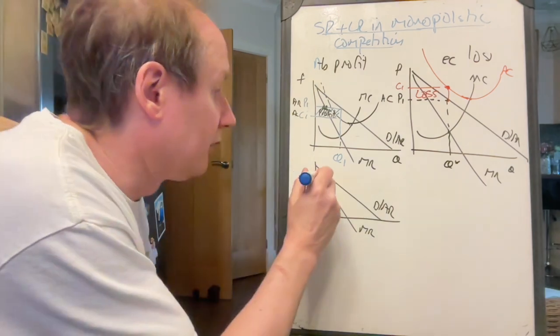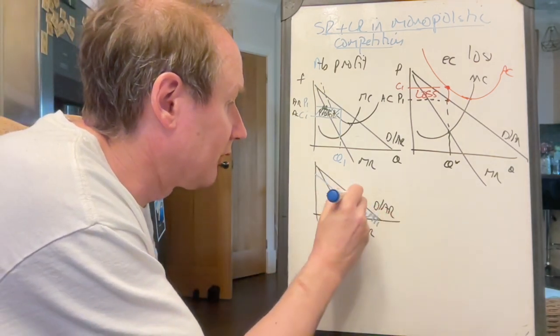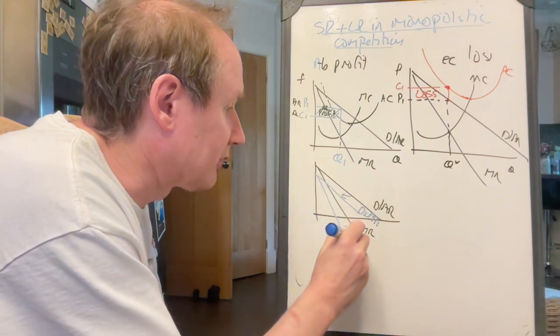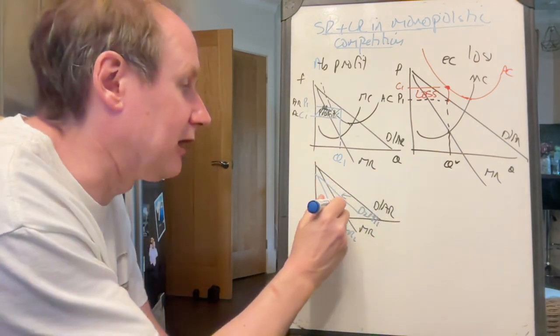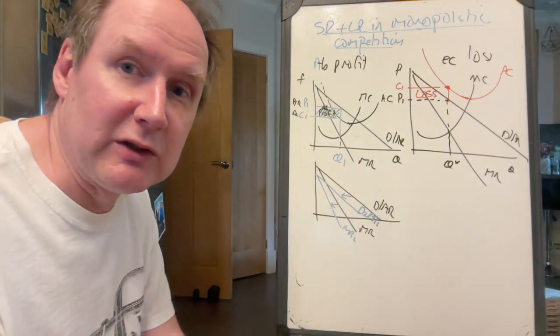New firms enter, so demand for the firm falls, and with it, marginal revenue falls, because marginal revenue is just derived from, it's got from, average revenue. So the firm faces falling demand.